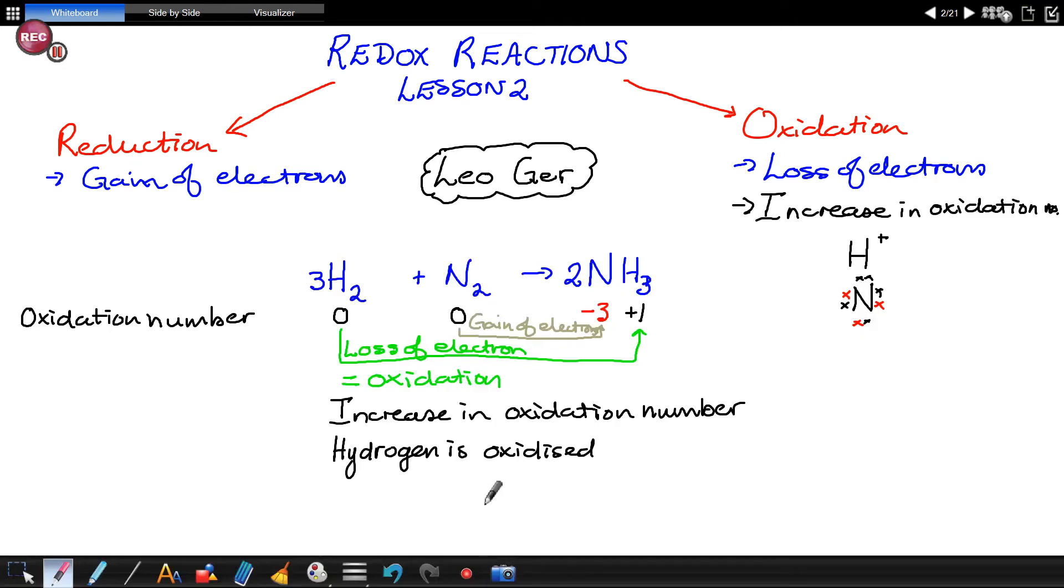And a gain of electrons is reduction. So, the oxidation number of nitrogen decreased. A decrease in oxidation number happened to nitrogen. So, nitrogen is reduced. So, reduction can also be defined as a decrease in oxidation number.